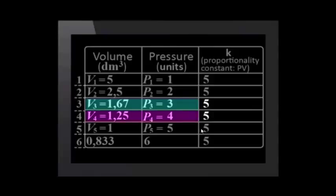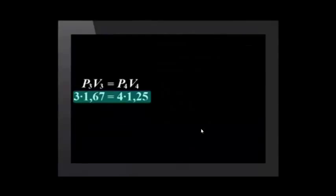3 times 1.67 equals 4 times 1.25 because both equal 5. There are some things you must be careful about when you use this equation.